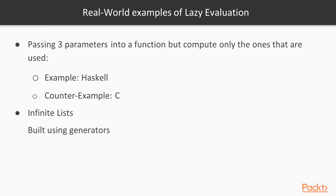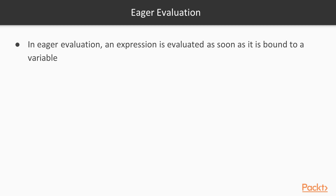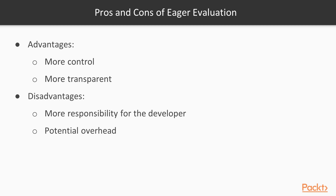We are going to look at how to use generators later in another video in this section. Eager evaluation is another strategy which basically evaluates the expression as soon as it is bound to a variable — so it is the opposite of lazy evaluation. It has some pros: you as a programmer have more control and the flow of the code is more transparent. On the other hand, it has disadvantages because you have more responsibility as a programmer, as well as potential overhead and it is more memory intensive.